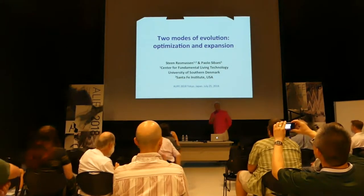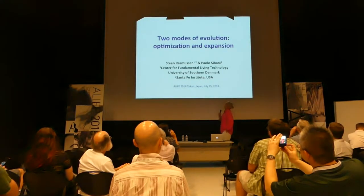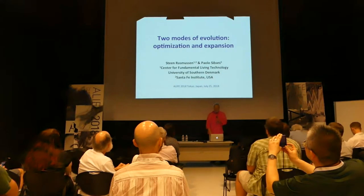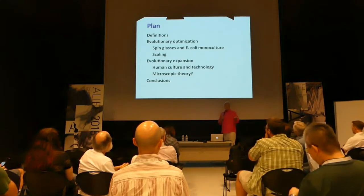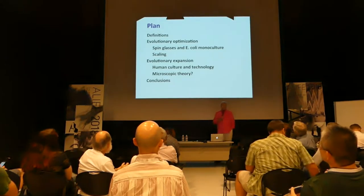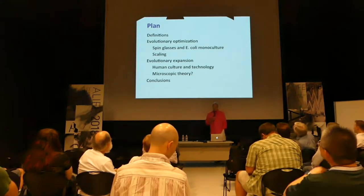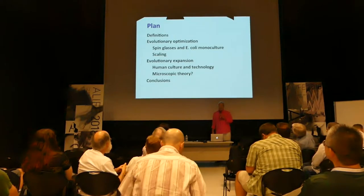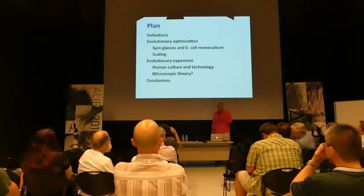I'm going to talk about two different kinds of evolution, two different modes. We call it optimization and expansion. I've done this work with Paul Sabino, who is one of my colleagues back at the University of Southern Denmark. The plan is to first go through what I mean with optimization and expansion, then look at some systems that show evolutionary optimization. We'll talk about some physical systems, some biological systems, see how they scale, and then I'll show examples of evolutionary expansion, focusing on human, cultural, and technological evolution.